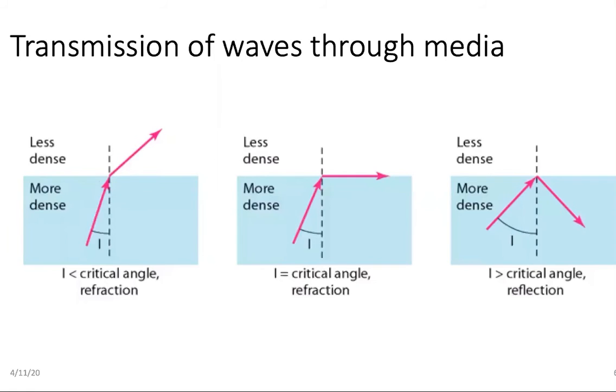The angle of incidence (I) is less than the critical angle — in this case, refraction occurs normally as the wave passes from one medium to another.